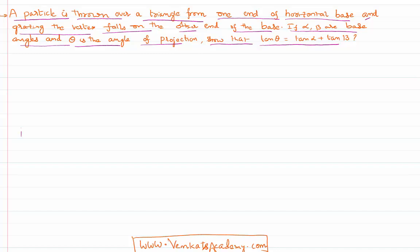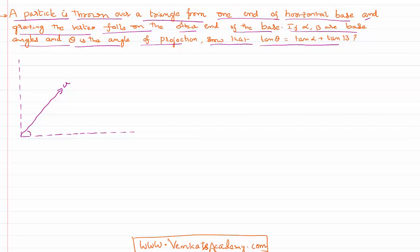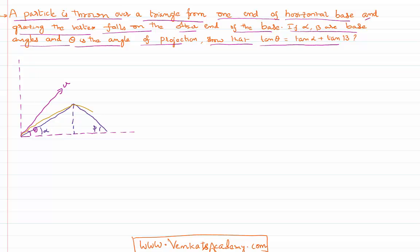Let us first draw a diagram to understand the problem. A body is projected with an angle theta — other than 90 degrees — and velocity u. It is projected over a triangle, where the base angles are alpha and beta. The path of the projectile grazes the vertex at height h maximum, then returns to the base. We need to find the relation between alpha, beta, and theta.